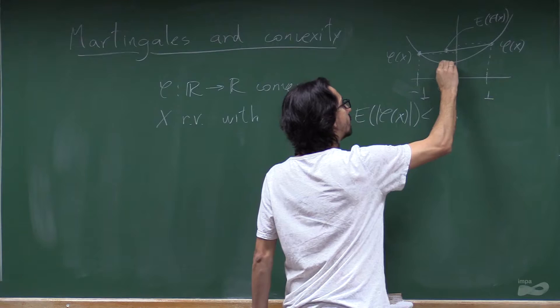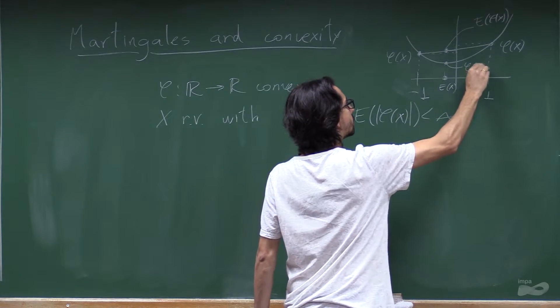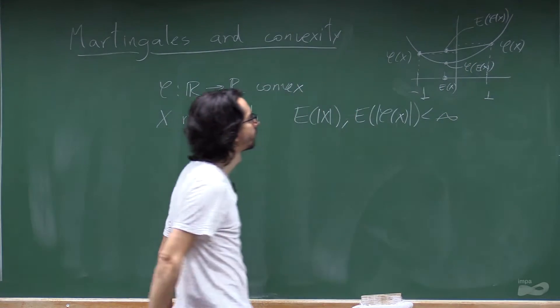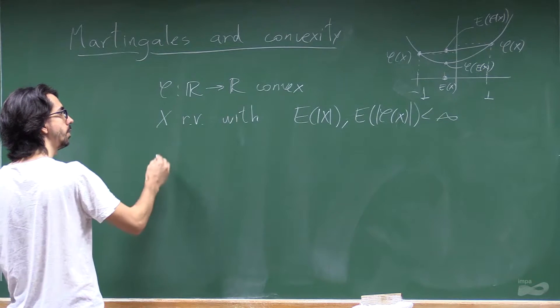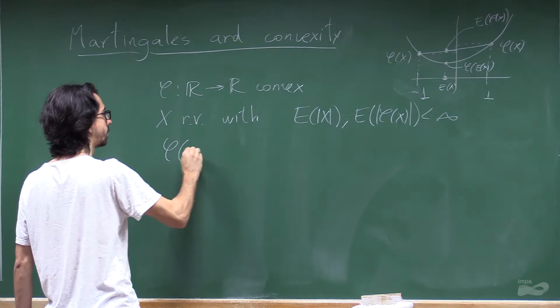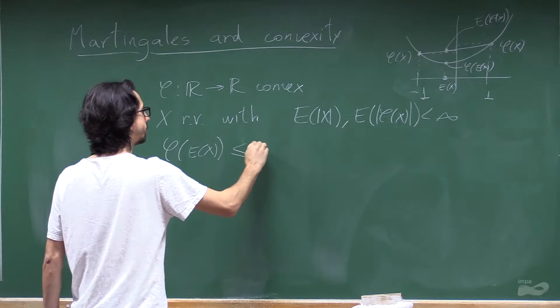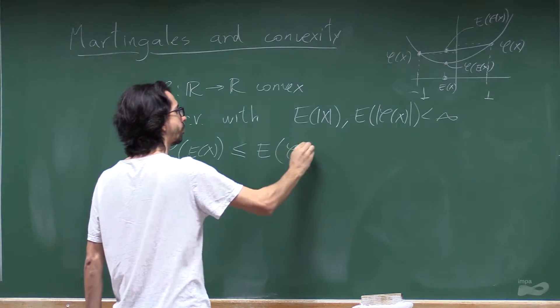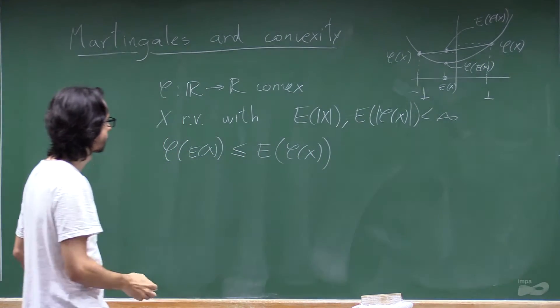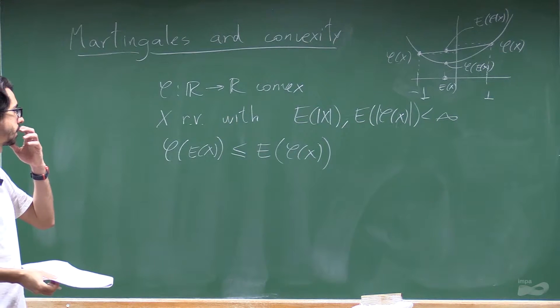And this is phi of the expectation of x. So we can see that the phi of the expectation of x is smaller or equal than the expectation of phi of x. And that's what Jensen's inequality tells us.